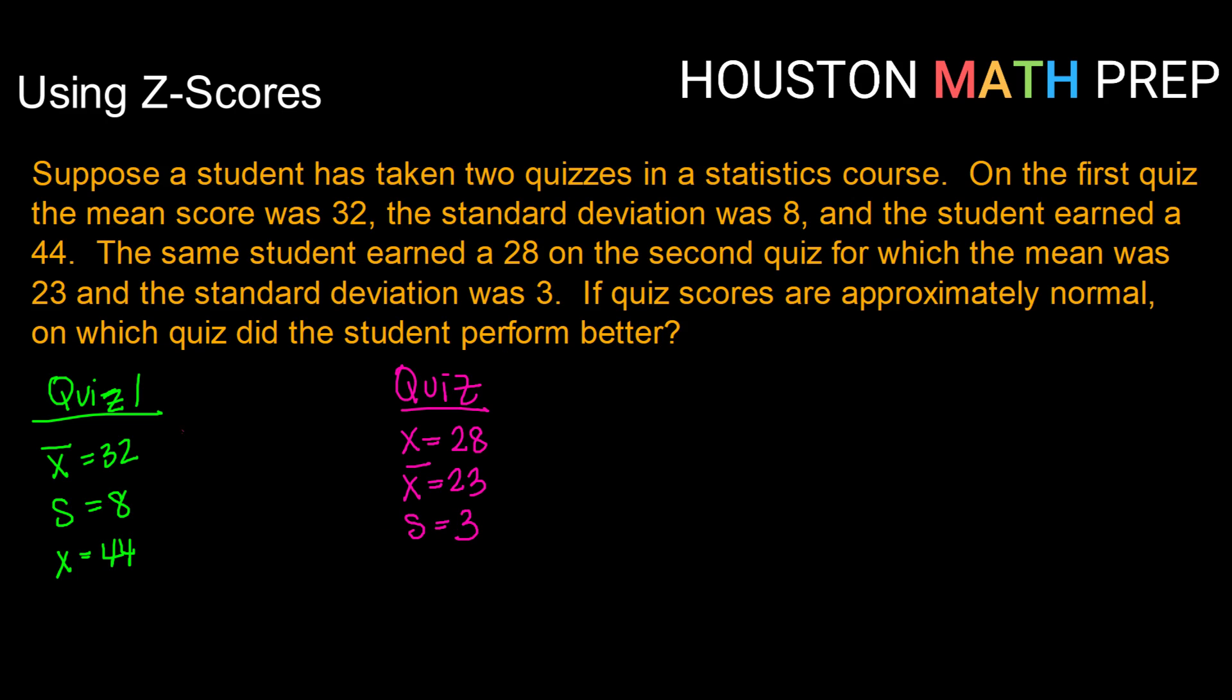So although when we compare just their data values, on quiz one the student earned a 44, and on quiz two the student earned a 28.